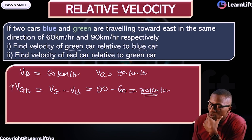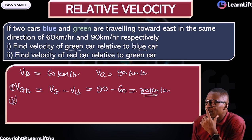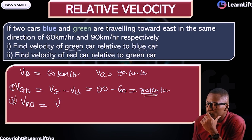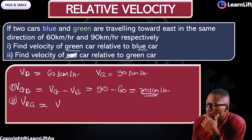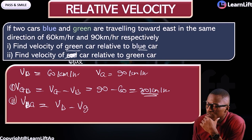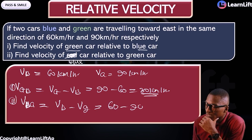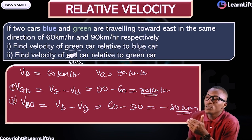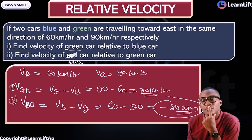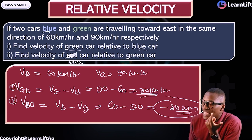Number two: find the velocity of the blue car relative to the green car. That is V(blue to green) = velocity of blue minus velocity of green = 60 minus 90 = minus 30 km/h. As I explained earlier, if you are in the green car you're going to see the blue car is behind with minus 30. If you are in the blue car you are going to see that the green car is ahead with positive 30.